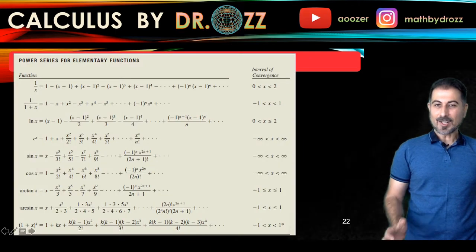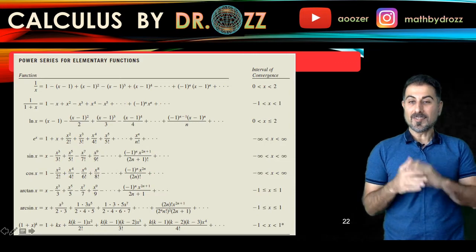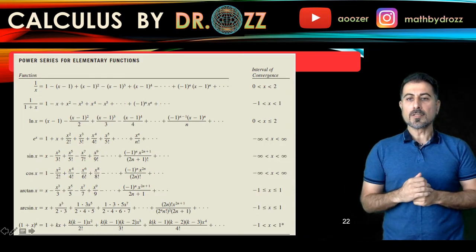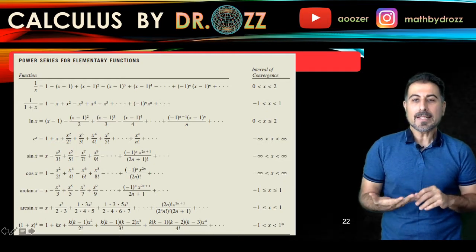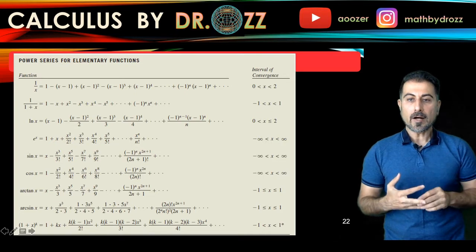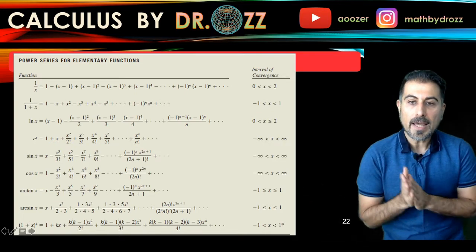Alright, here are the power series for elementary functions. As you see this is a long list and you can find a copy in the e-book or in the lecture notes. So you have 1 over x, 1 over 1 plus x, ln x, e to the x, sine x and cosine x, arctan and arcsine and 1 plus x to the power of n.